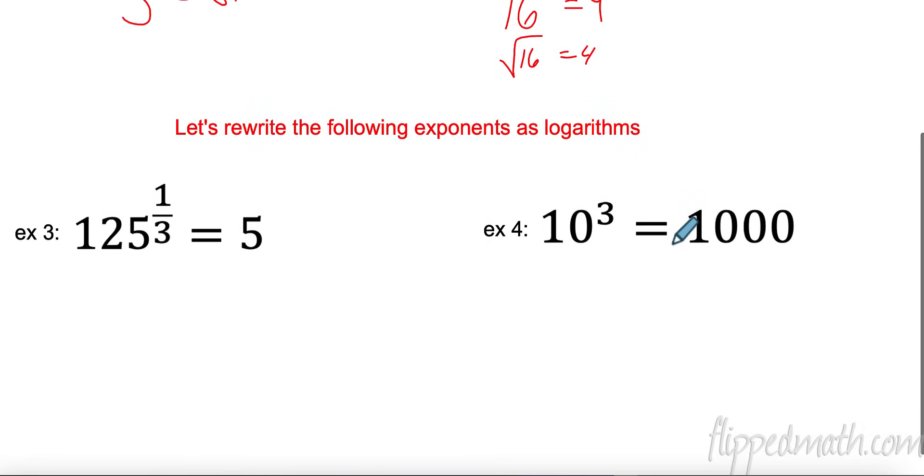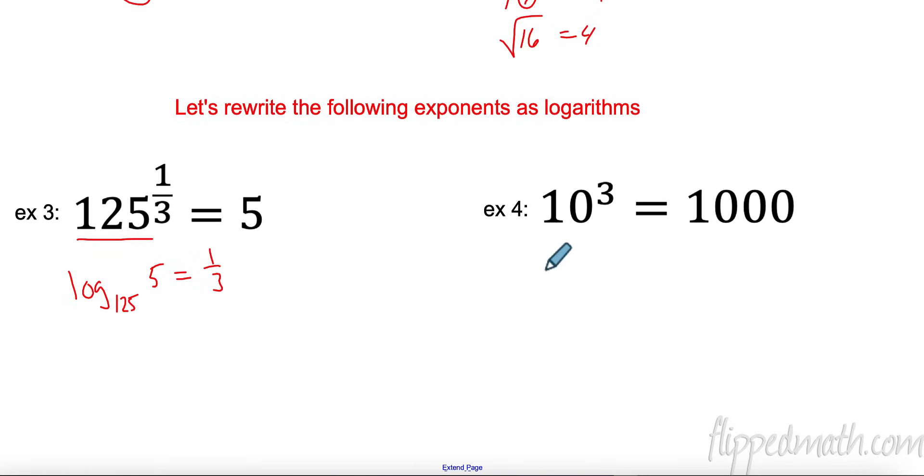Let's rewrite these following exponents as logarithms. I write log base, what is my base here? My base is 125 of 5 equals, and then my exponent always goes to the other side. Because the third root of 125 is 5. 5 times 5 times 5 is 125, so 125 to the third power. This is saying the log base 125 of 5. How many of these do I need to get to 5? I need 1 third. I need a third root of them.